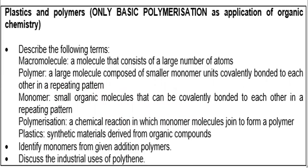We looked at plastics and polymers and learned all the definitions: macromolecule, polymer, monomer, polymerization, and plastic. We learned about polyethene, knowing that the monomer is ethene, and we discussed the industrial uses of polyethene — you can be asked for at least two uses. Those are the things the examination guidelines require us to know.